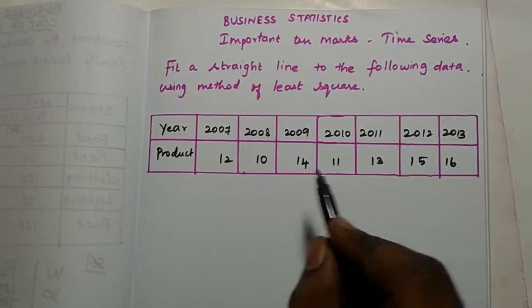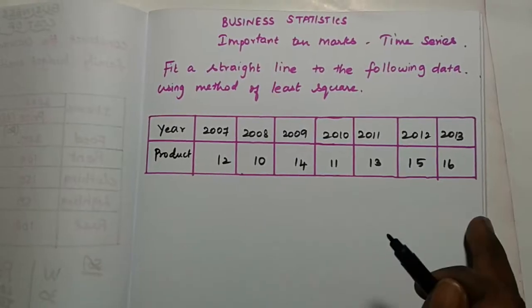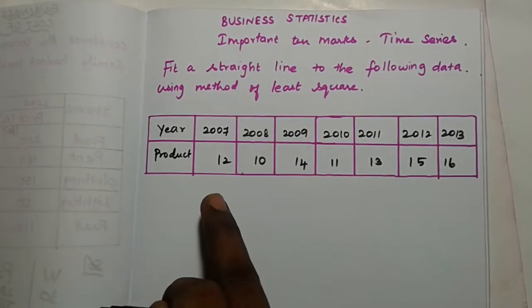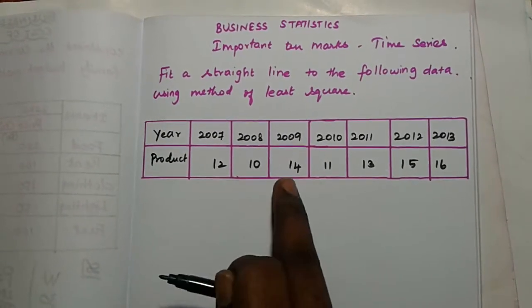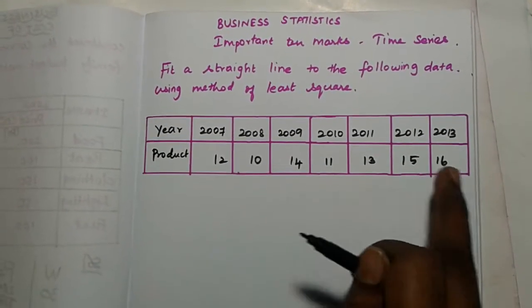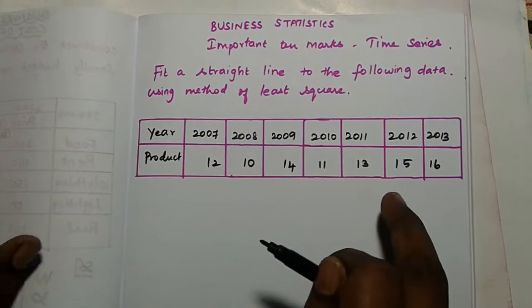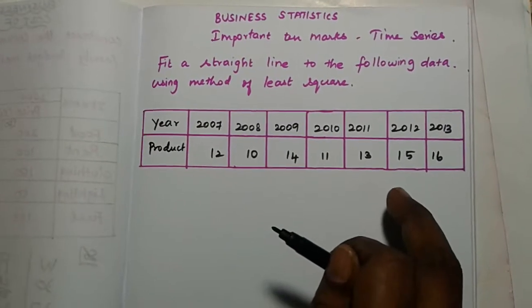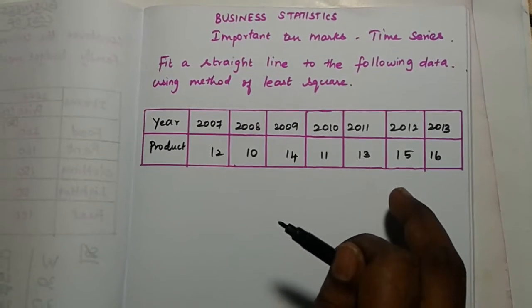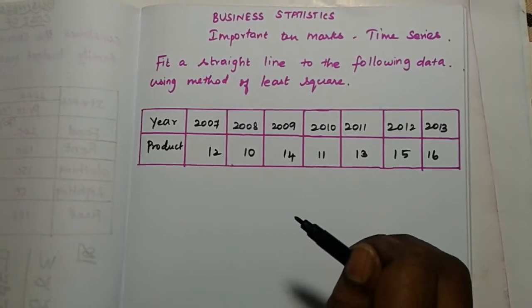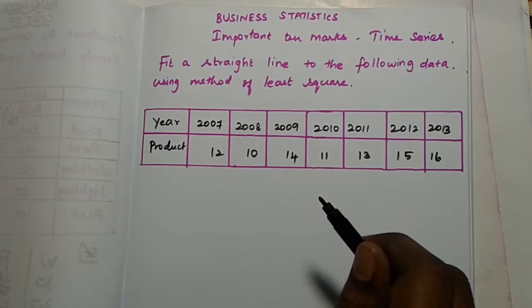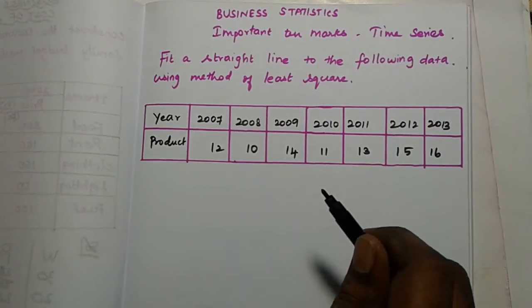One is odd or even. So in the problem, count how many data points: 1, 2, 3, 4, 5, 6, 7 — so this is odd. For the odd case, the formula is like this. We will talk about it in the video.